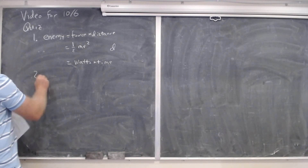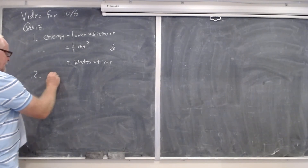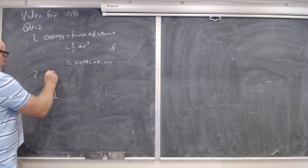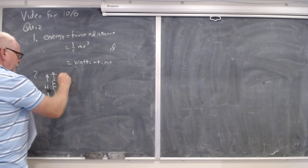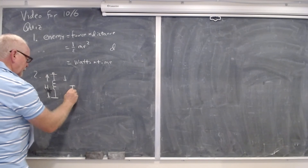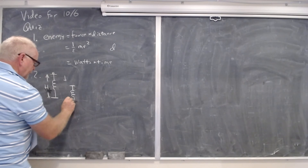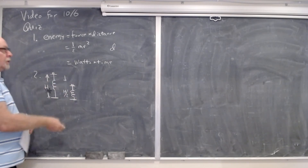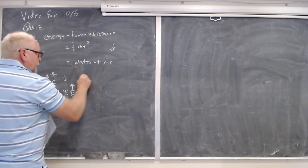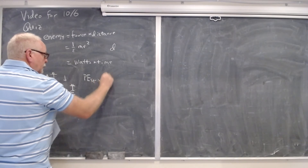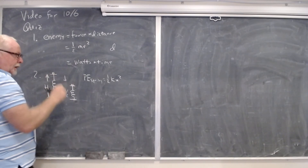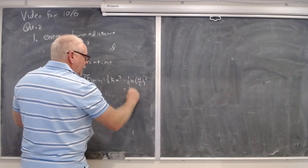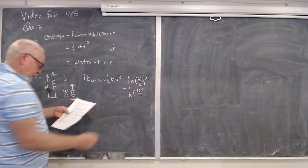Number two — six people got this wrong too, and I kind of expected that. The problem was: you have a spring of height h, you put a little weight on it and compress it downward so the spring is half its height. Then you let go and want to know how high it goes. The potential energy of a spring is one half k x squared. If you've compressed it h over 2, that gives one half k (h/2)² which is one eighth k h squared. So the answer was B.